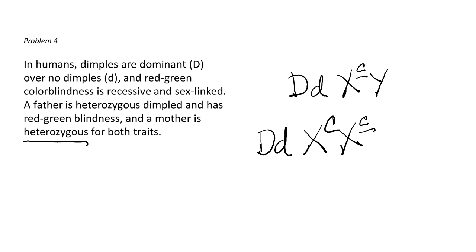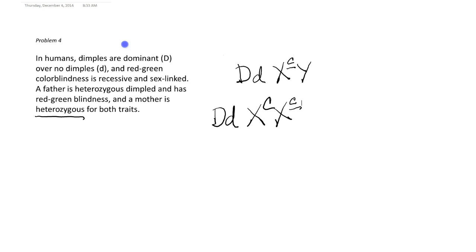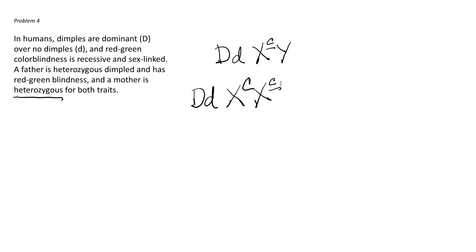What type of gametes will these parents be able to make? If we look at the dad, we have to look at every possible combination of the D and a sex chromosome. He would have a possibility of having the dominant allele for dimples with an X chromosome in some of his gametes, and that X chromosome would have a lowercase c. He could also have the dimpled allele with the Y chromosome, which would not be carrying an allele for red-green colorblindness or for normal color vision.